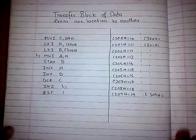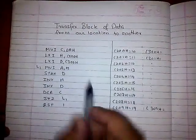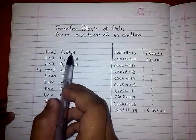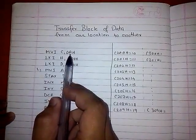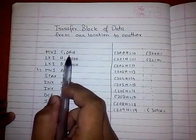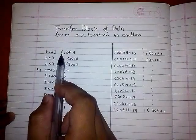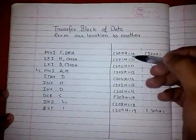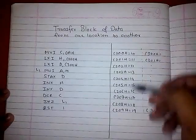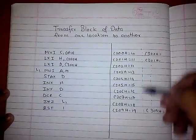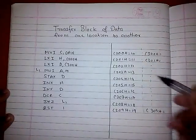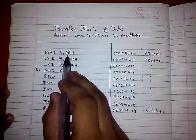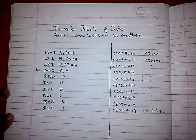How will we do this? Let's see. First, we will do MVI C, 0AH. 0A means 10. We are transferring the data 0A to register C. We will use register C as a counter, so that we transfer only this 10-number block of data from C200 to C209. This will act as a counter to count these 10 numbers.